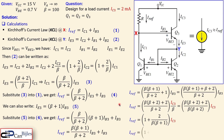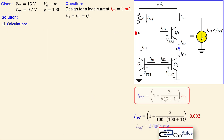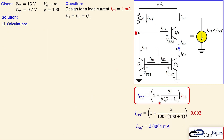The final expression is the same as in example number two using the beta helper. Using this equation with the required load current, we can find the reference current: I_ref = (β + 2)/(β(β + 1)) · IC3 = (2/100)·(1/101)·2 mA ≈ 2.0004 milliamps. The reference current is only about 0.4 microamps larger than the load current — almost identical.